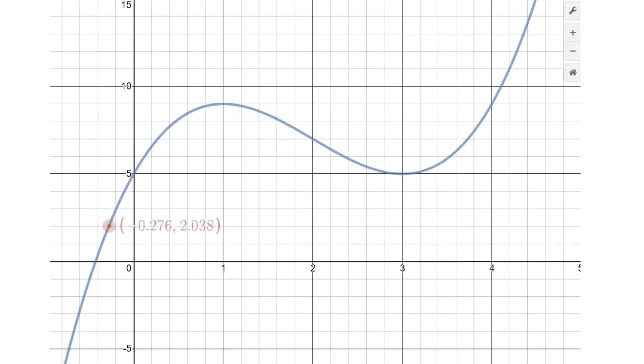Okay, here in Desmos we have the graph drawn out in blue. This is the graph of the function that I just described for f of x, and if we follow this point here along this blue curve we can see that the point itself is changing.